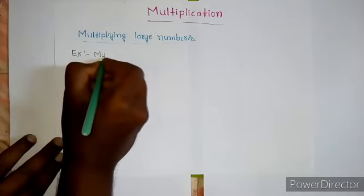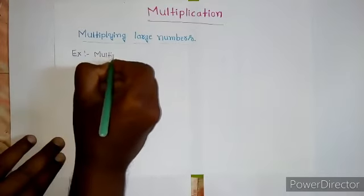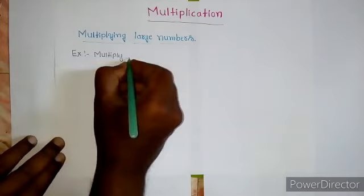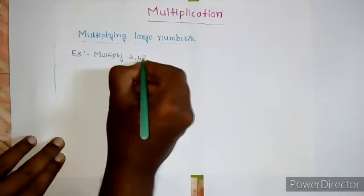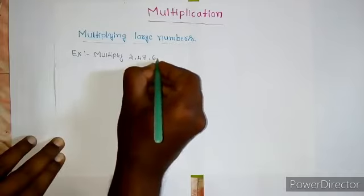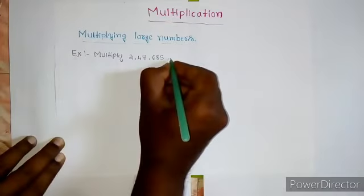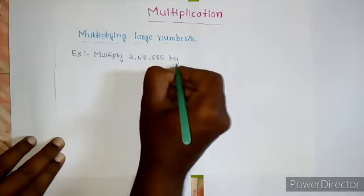Multiply two lakhs forty seven thousand six hundred and eighty five by four.